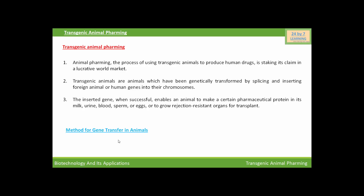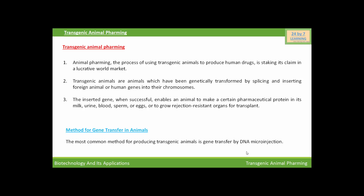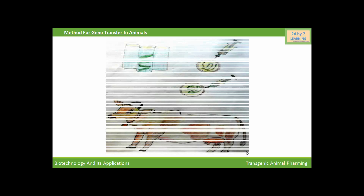Now we will see the method for gene transfer in animals. The most common method for producing transgenic animals is gene transfer by DNA microinjection. This process completes in the following steps.